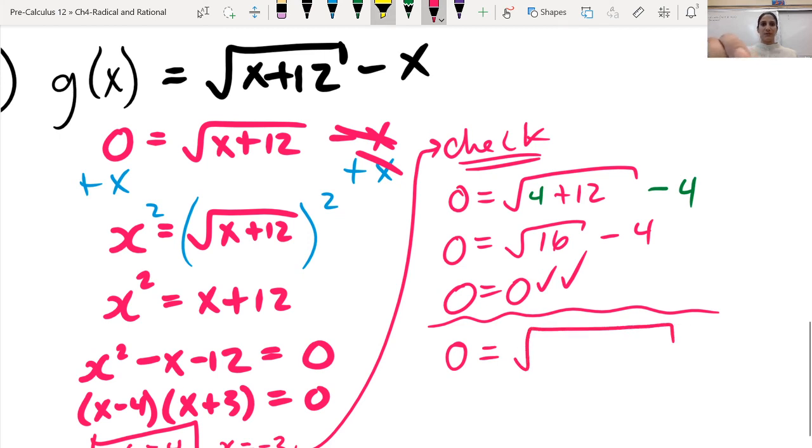So it's 0 equals, and when I go to plug this in, instead of x, I'm going to plug in that negative 3 plus 12. And then at the end here, I had, oops, I'm just trying to get my color straight.